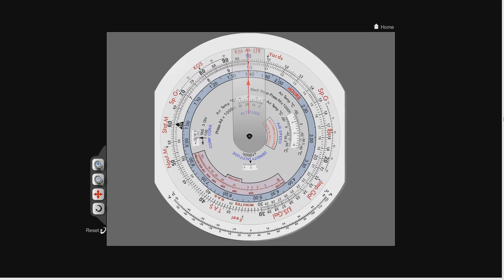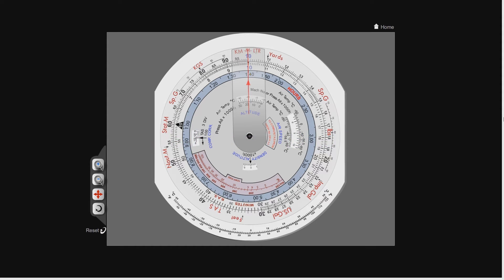How can we work out Mach numbers and true airspeeds with this? We can use another equation: the Mach number is equal to the true airspeed divided by the local speed of sound. If I want to know how fast I'm going relative to the speed of sound, I simply divide my speed by the speed of sound. For example, if the speed of sound is 600 knots and I'm travelling at 600 knots, then 600 divided by 600 equals 1 — so my Mach number is 1, meaning I am travelling at the speed of sound.